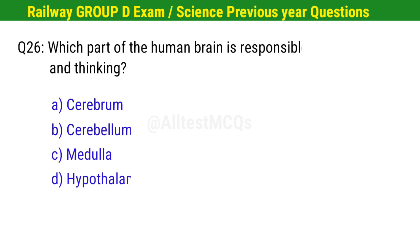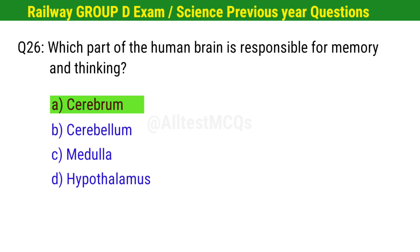Question No. 26. Which part of the human brain is responsible for memory and thinking? Correct option is A. Cerebrum.